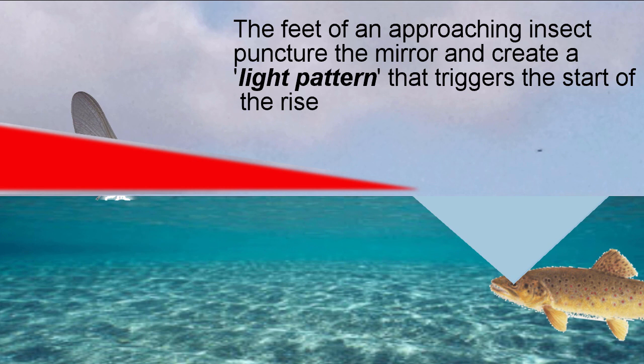Trout are able to see parts of an insect or artificial fly that rests on or punctures the mirror. The bodies of emerging flies break through the water surface. They hang beneath the mirror. The legs of duns resting on the surface also create a light pattern that triggers the start of the rise.